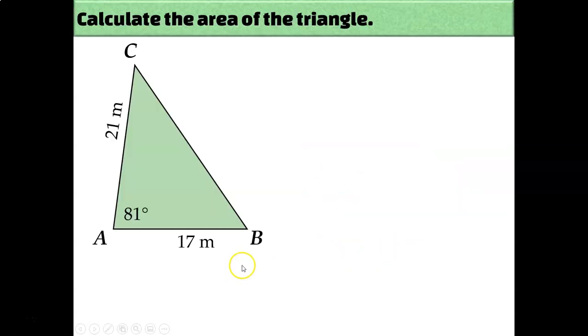So let's try an example. It can be helpful to label each of your side lengths with lowercase letters. It'll make filling in your formulas a little bit easier. Across from angle A is little a, across from angle B is little b, and across from angle C is little c.